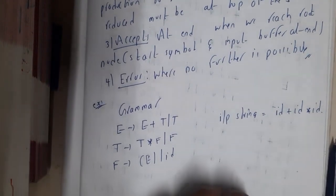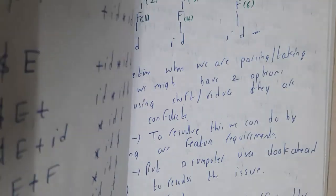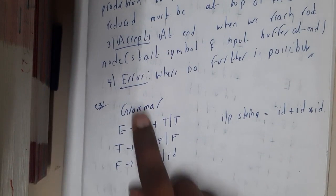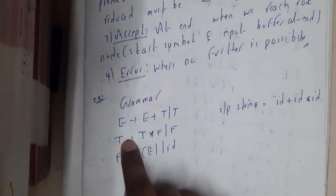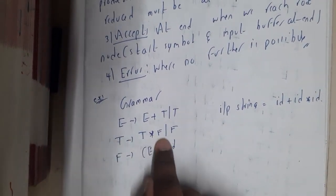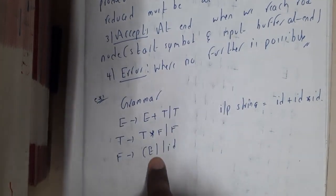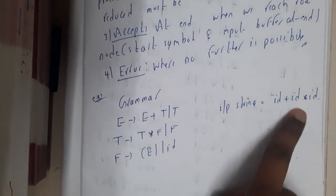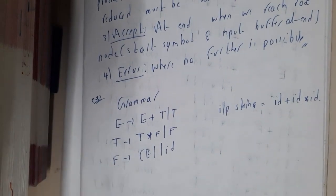Let us go through a detailed example. The grammar is: E → E+T | T, T → T*F | F, F → (E) | id. The input string is id + id * id.